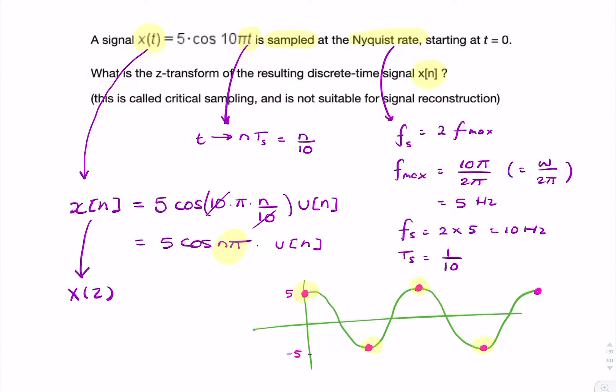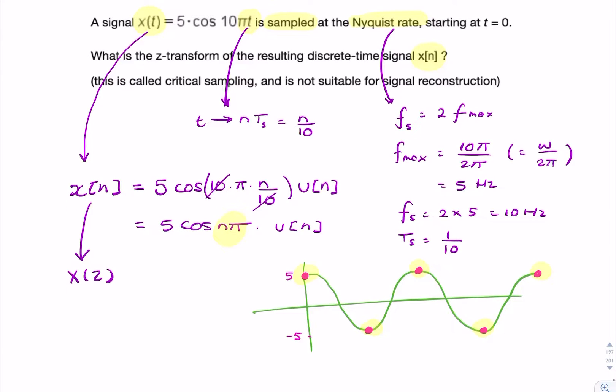So we have alternating 5, minus 5, 5, minus 5, 5, minus 5. So we can write that in the z domain. We can write it in the time domain as something like this: 5, minus 5, minus 1, minus 1, 1, minus 1, etc.